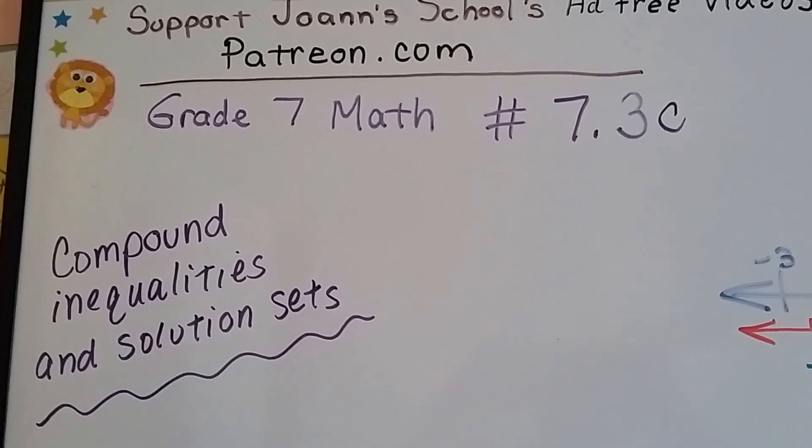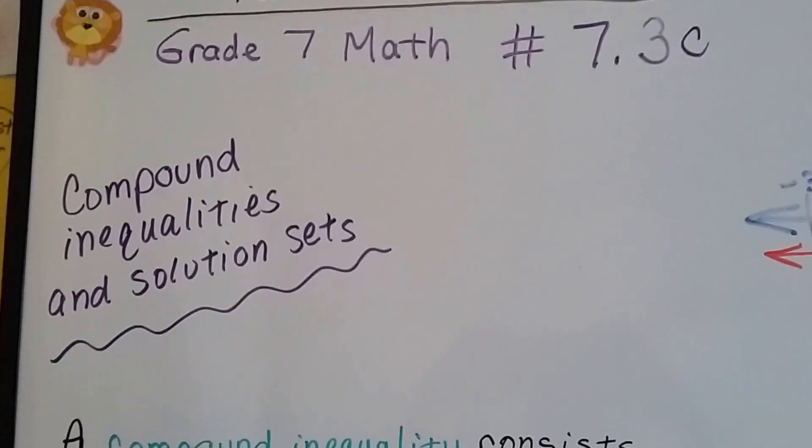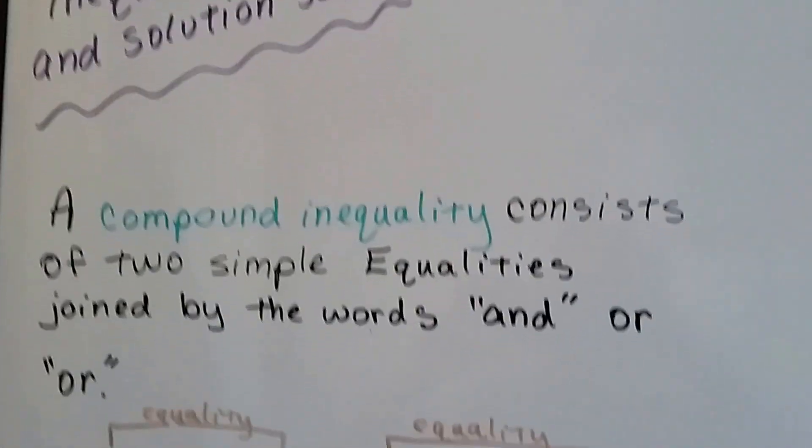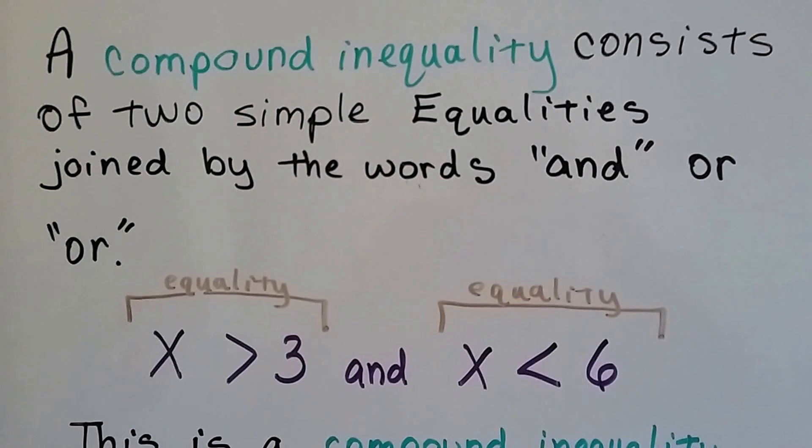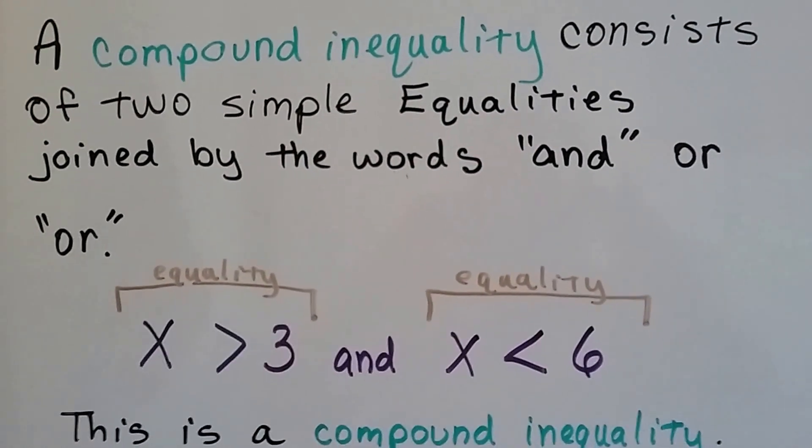Grade 7 Math, number 7.3C: Compound Inequalities and Solution Sets. A compound inequality consists of two simple inequalities joined by the words 'and' or 'or'.